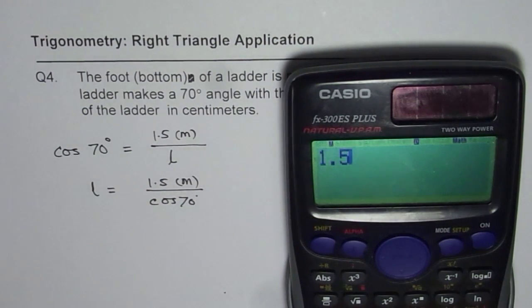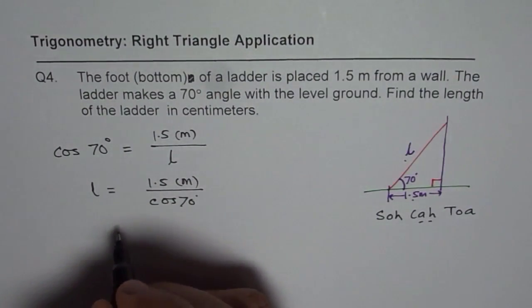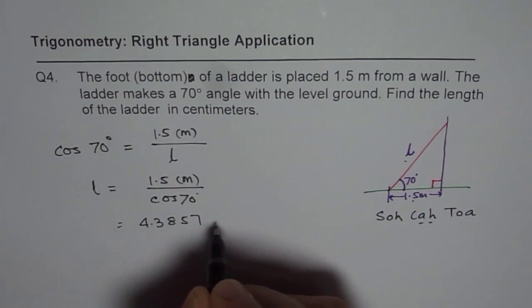1.5 divided by cos of 70 degrees, bracket close, equals to 4.3857. So we have 4.3857 meters.